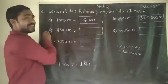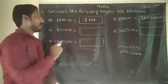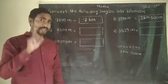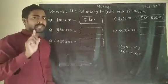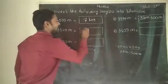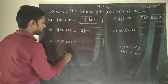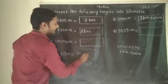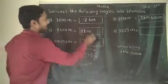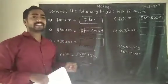Next example (c): 8500 meters. We know 8000 meters means 8 km. And the remaining 500 meters we write as it is. So for 8500 meters, we split it as 8000 and 500. 8000 means 8 km, and 500 stays as 500 m. The answer is 8 km and 500 m.